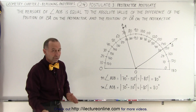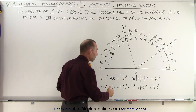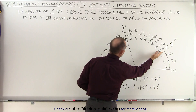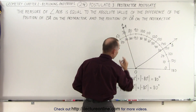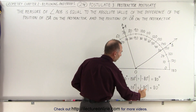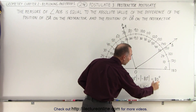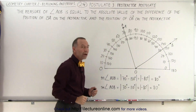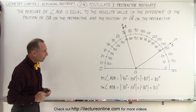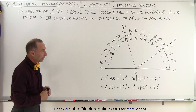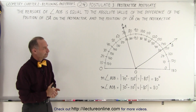And then you can see that if we start from the other direction, the measure of the angle would then be 30 degrees minus 110 degrees, which gives us minus 80, but since we take the absolute value, we get again a positive 80 degrees as the measure of that angle. And that is what we mean by the protractor postulate.